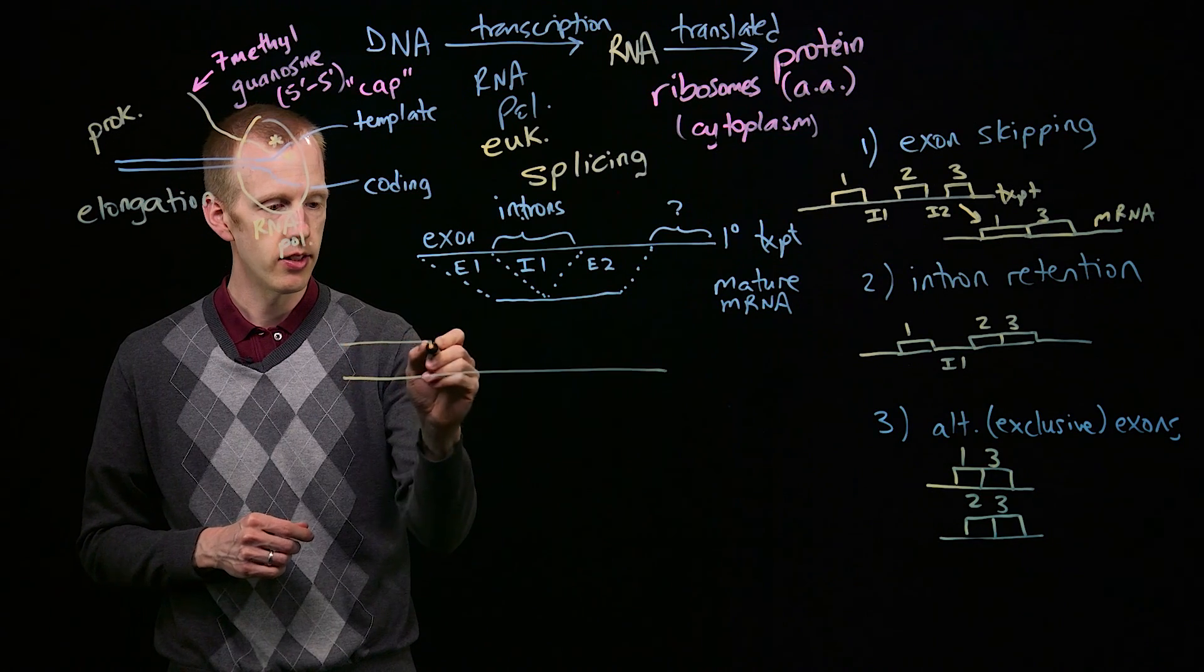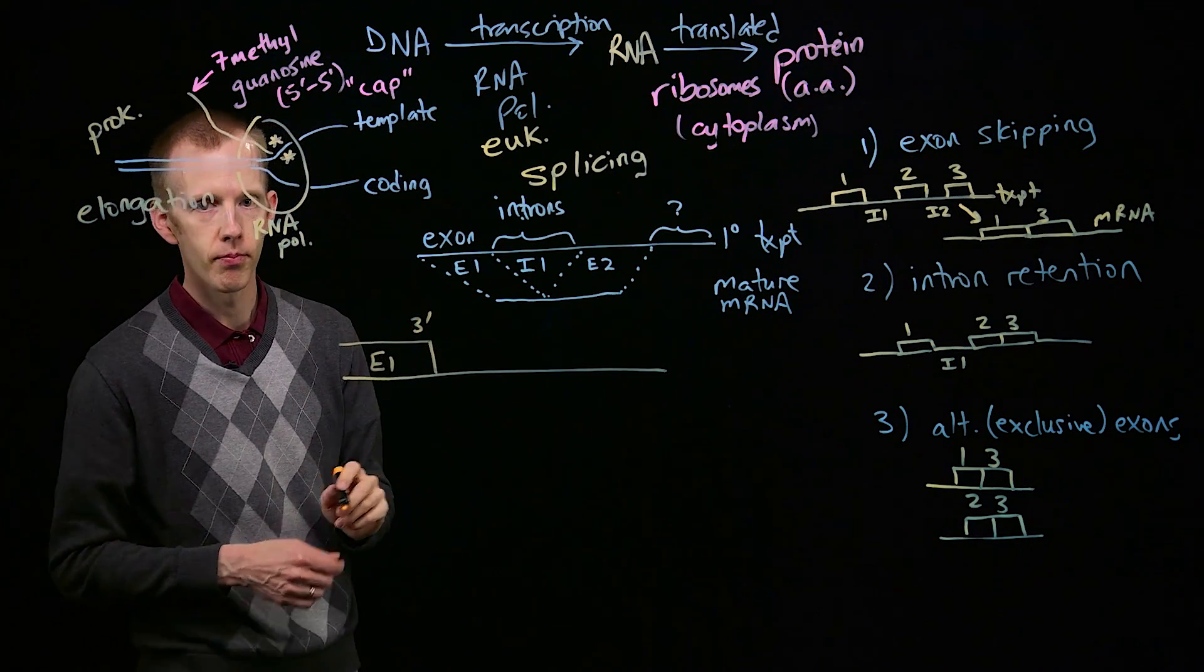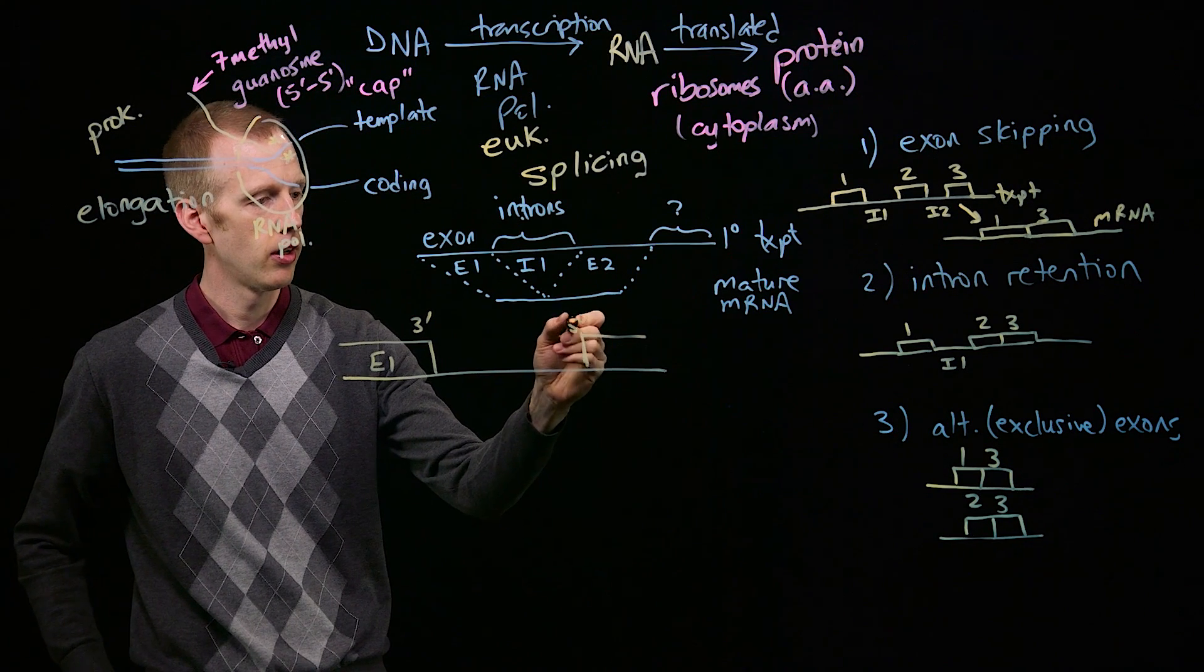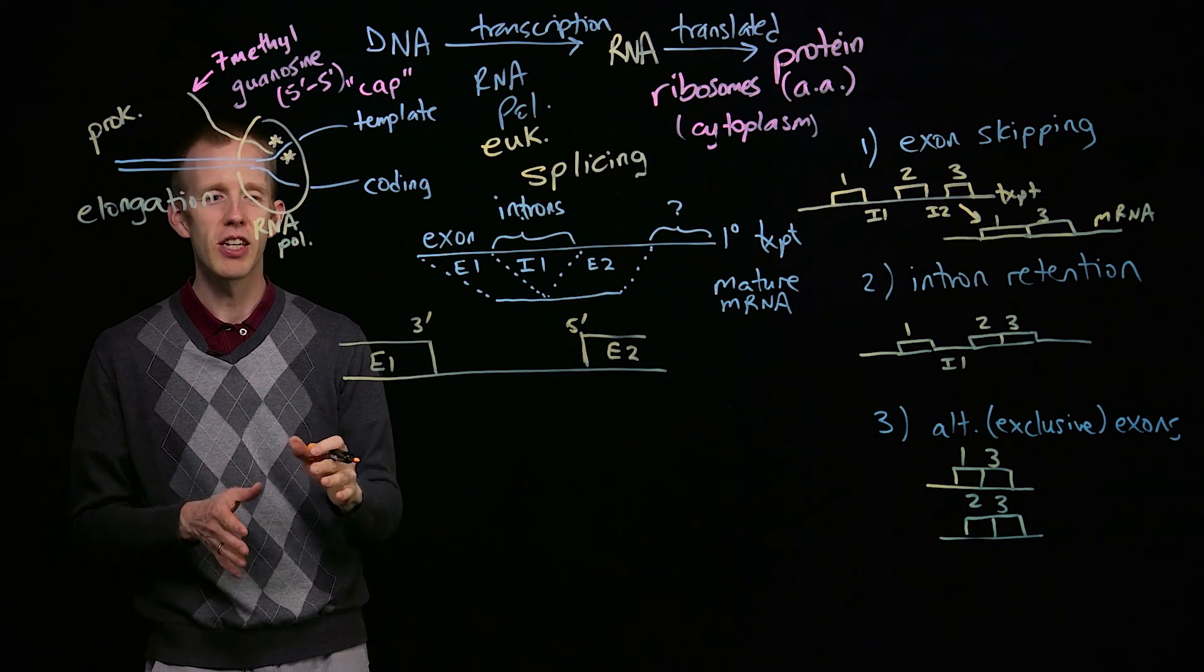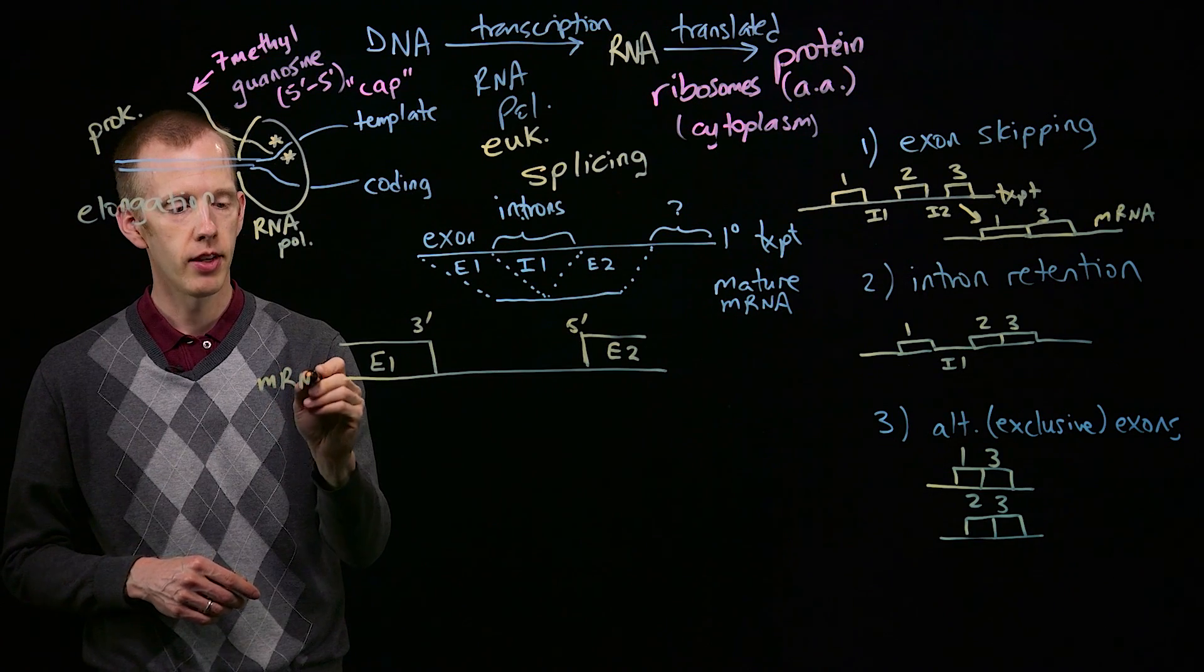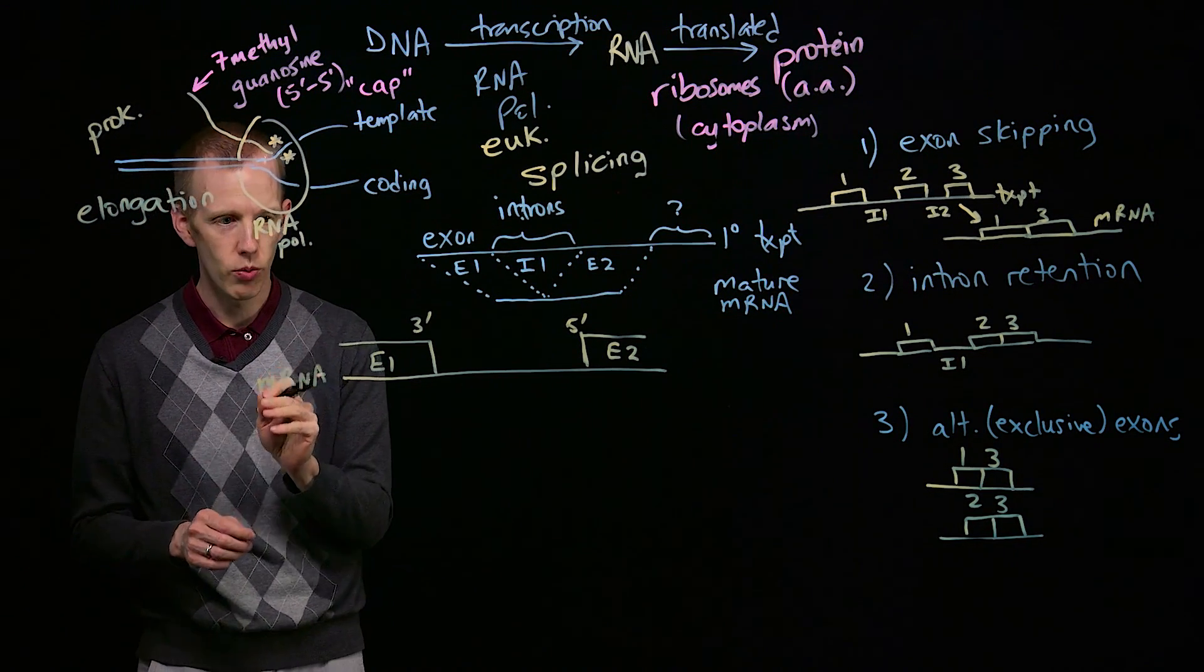So let's say this is the 3' end of an exon. We'll call that exon 1. And here's the 5' end of exon 2. There is a specific set of sequences that are located, remember this is messenger RNA, in the transcript. These are sequences that are inside the intron.